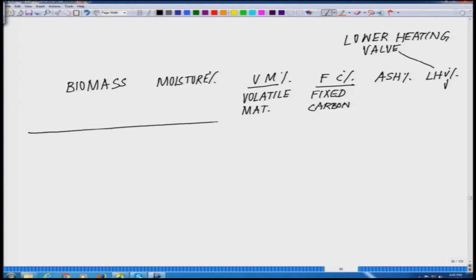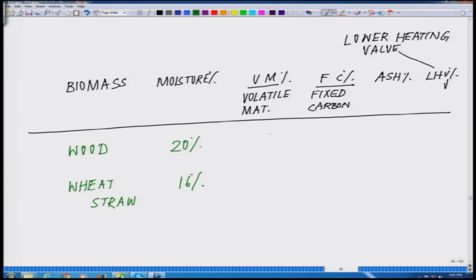Let us compare wood and wheat straw. In wood there will be approximately 20% moisture, whereas in wheat straw 16% moisture. In terms of volatile matter, wood has 82% volatile material whereas wheat straw has only 59%. Fixed carbon in wood is 21% versus 17% in wheat straw. Ash is 1% for wood versus 4% for wheat straw. And the lower heating value is 18.6 for wood versus 17.3 for wheat straw.